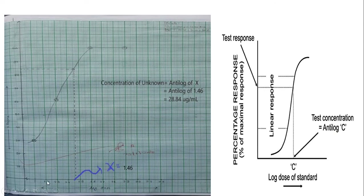The log dose response curve can be plotted or drawn on simple logarithmic paper. On the x-axis you need to plot the log of the doses, and on the y-axis you need to take the percentage response. From the observation table you plot the percentage response and draw the sigmoid-shaped log dose response curve.